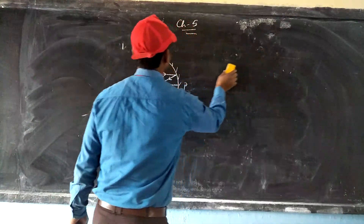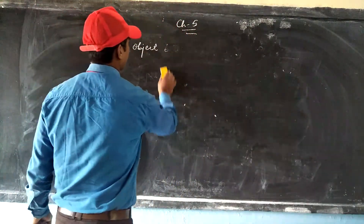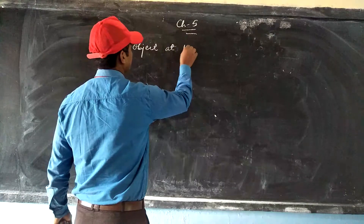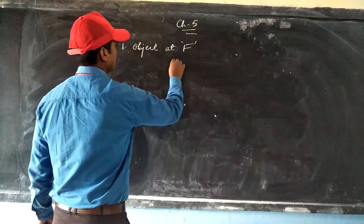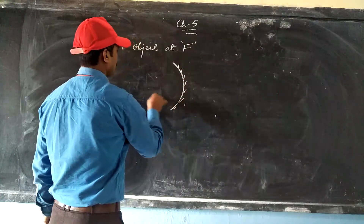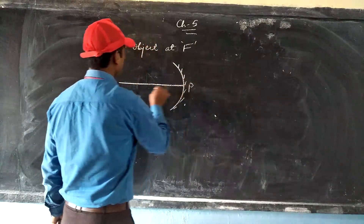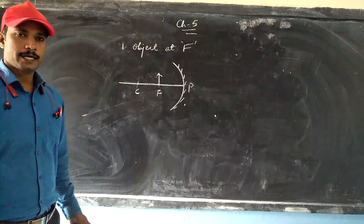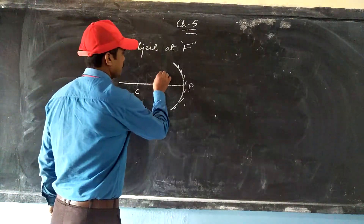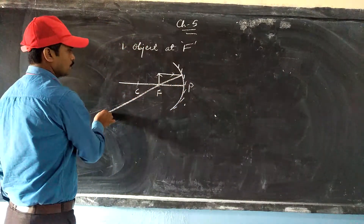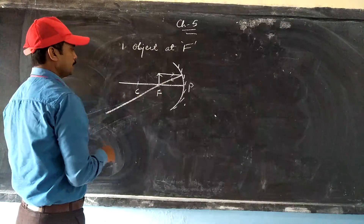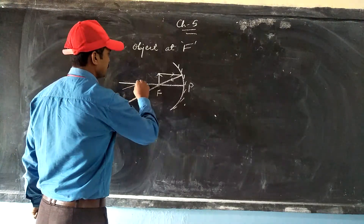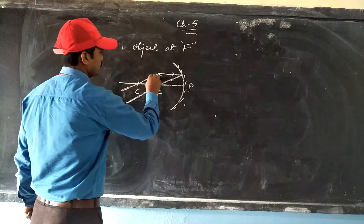The next case is when the object is placed at the focus. The object is exactly at F. We take one ray parallel to the principal axis, which after reflection will pass through the focus. The second ray is the one passing through the focus, which after reflection goes parallel.